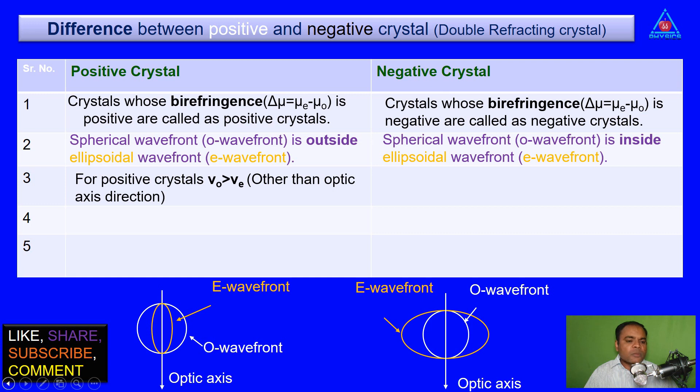In negative crystal, velocity of ordinary ray is less than velocity of extraordinary ray, other than optic axis direction.